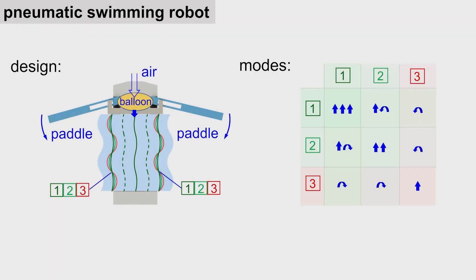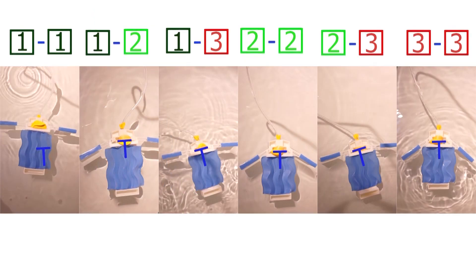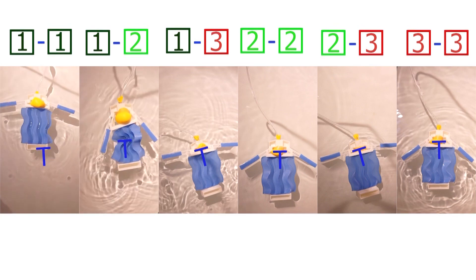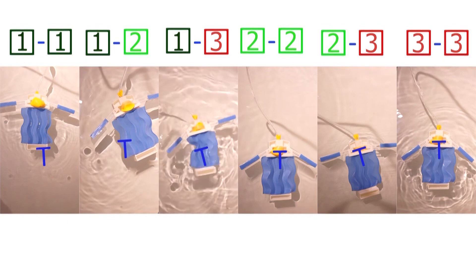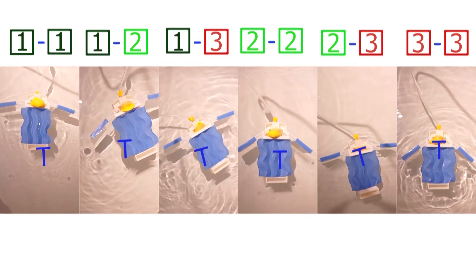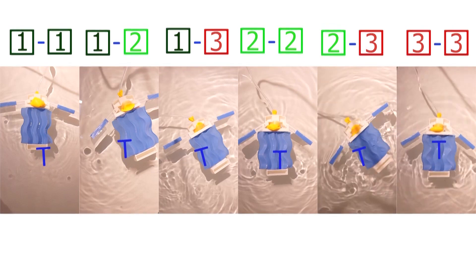With curved origami, we can even make simple robots to do complex movements. With a single pneumatic input, this robot has nine different modes, including fast, medium, slow, linear, and rotational movements, only by switching the origami creases.